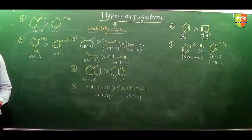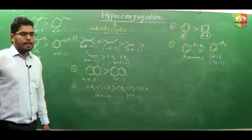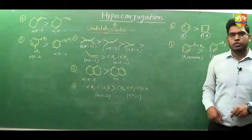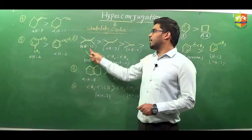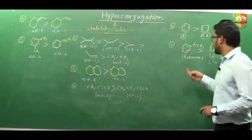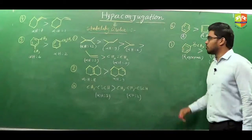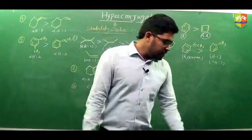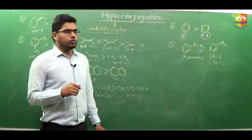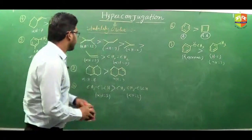So like this we can compare stability. Whenever you have an alkene and only hyperconjugation is possible, just calculate the number of alpha hydrogens — more alpha hydrogens means more stability. But when both resonance and hyperconjugation are possible, resonance will be the dominating effect, and stability is defined accordingly. There are cases where the number of alpha hydrogens is the same, and in that case we need a different approach.